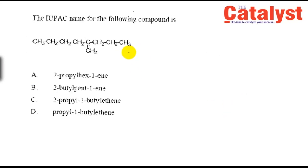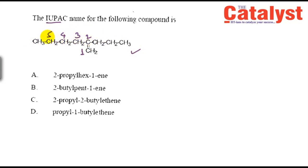The next question is about IUPAC nomenclature. The trick here is to select the longest carbon chain correctly. Moving left: one, two, three, four, five, six — it is actually hexene. There is a propyl group attached, so it is 2-propylhex-1-ene. The answer is option A: 2-propylhex-1-ene.